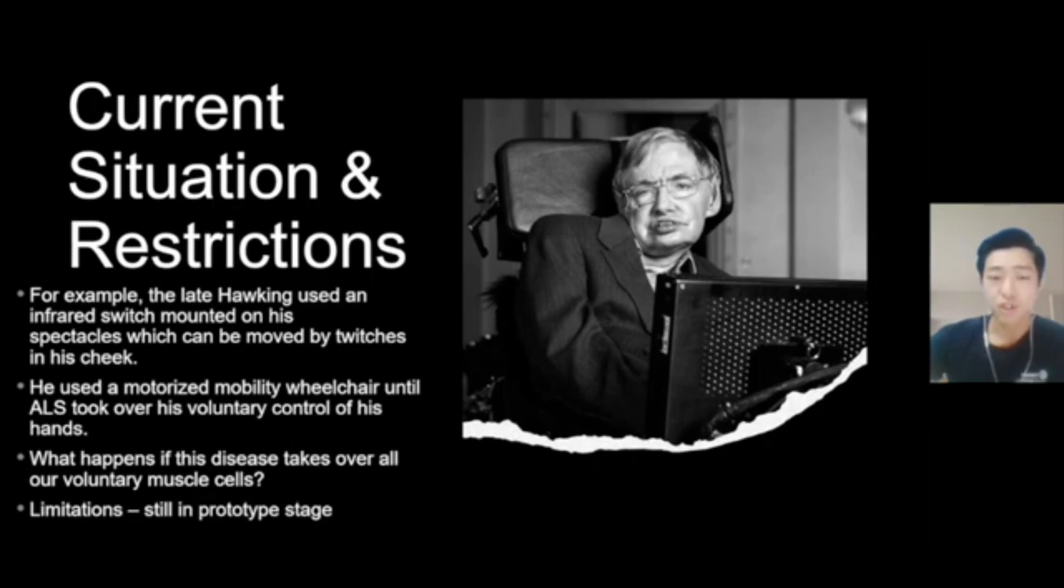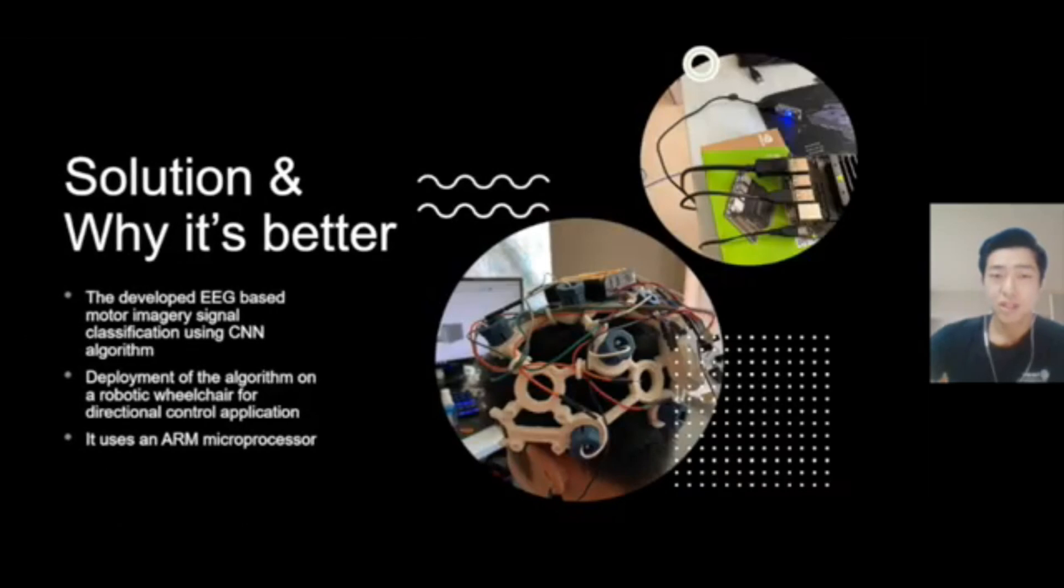The limitations of my project is that it is still in a prototype stage, so it will take some time before it is rolled to the general public. The solution for my project is the development of EEG-based motor imagery signal classification using CNN algorithm, or Convolutional Neural Network algorithm.